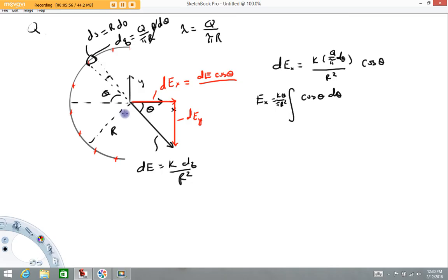My theta is going to start from down here, which is minus pi over 2, and end up over here at pi over 2. So my limits are from minus pi over 2 to plus pi over 2. That should do it.